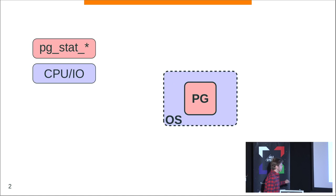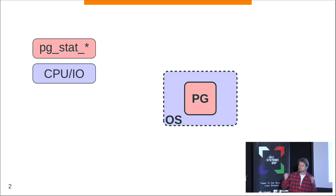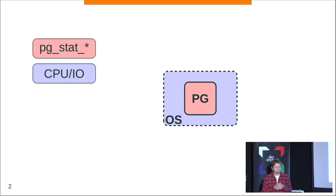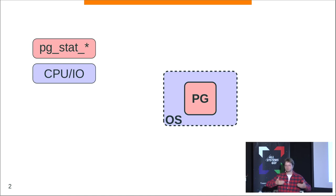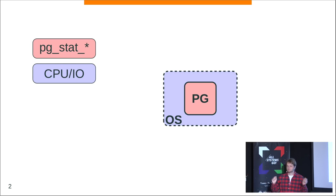And then we suddenly realize: we run Postgres not in a vacuum. We run it on top of some operating system. People start thinking we should monitor something here — Postgres interacts with the OS, something could go wrong, so we have to monitor it too. Usually people say let's monitor something global, like CPU utilization or I/O utilization.